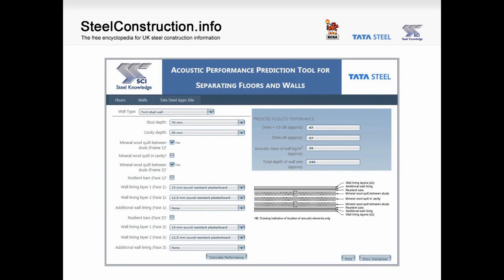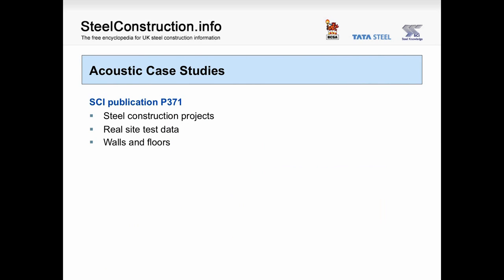The system for walls is similar — there are four different steel frame walls that the user can select from, and the user can input various parameters including different layers of boards, whether insulation is included, and the stud depth. For walls, the DnTW plus CTR value is given along with the DnTW value on its own. To show that this is not all just theory, a series of case studies has been produced, published in SCI Publication P317, based on real buildings with real on-site test data.